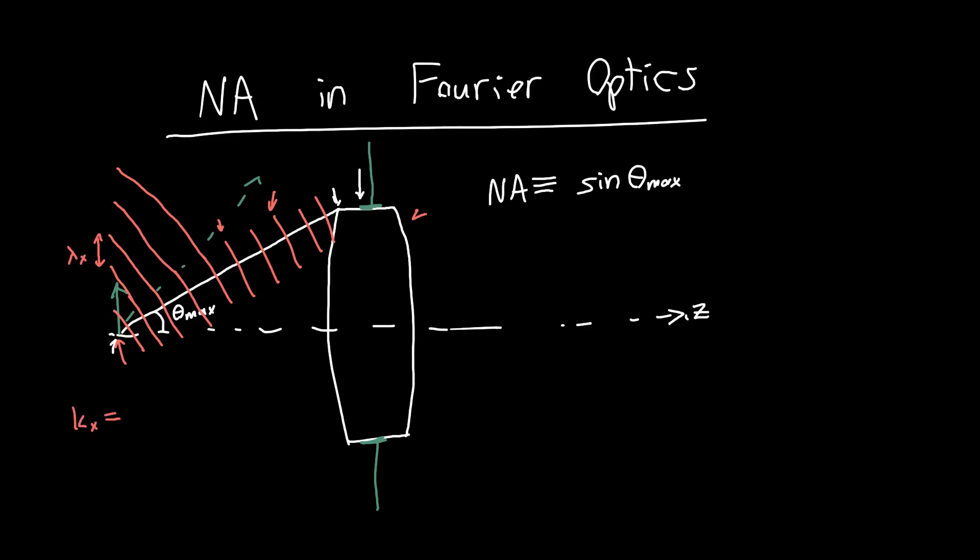But we know that this plane wave of a particular angle corresponds to a certain spatial frequency in our object. So the spatial frequency kx is just 2π over λx, or if you prefer, just our initial wave vector k, which is 2π over λ₀, the wavelength in free space, times sin θ. So if there's a maximum angle that we can support going into our system, then there's a maximum spatial frequency.